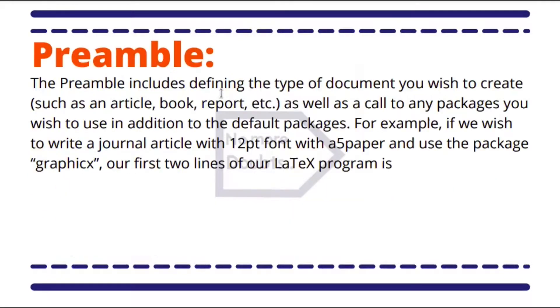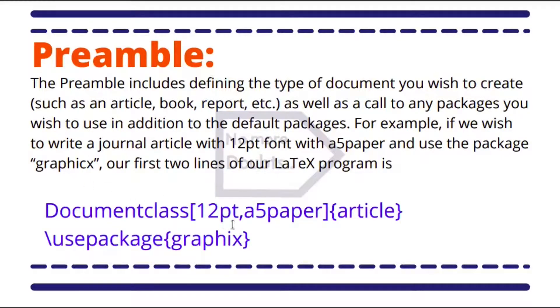Let's see more about the preamble. The preamble includes defining the type of document you wish to create, such as an article, book, report, etc., as well as a call to any packages you wish to use in addition to the default packages. For example, if you wish to write a journal article with 12 point font size within an A5 paper and you also want to use the package 'graphicx' to include images, then the program is this: 12pt means the size of font is 12 points, A5paper means the entire document is printed into an A5 paper, and the document is article. We will use the package graphicx to include images.